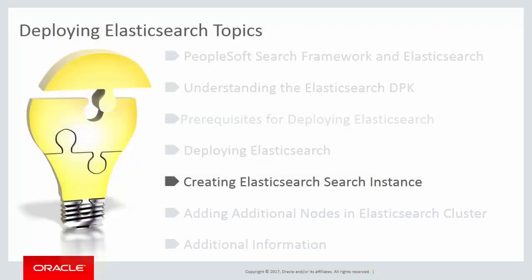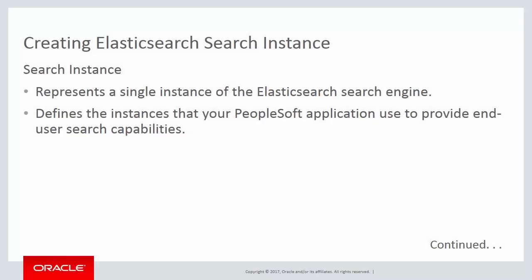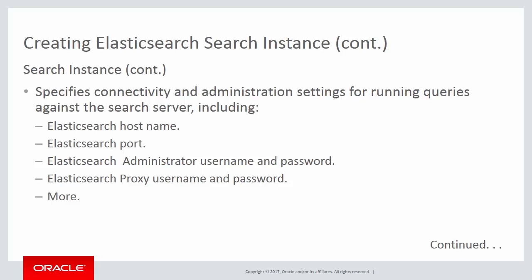After installing Elasticsearch, the next task is to connect the PeopleSoft application with the Elasticsearch engine through a search instance. A search instance in the PeopleSoft Search Framework represents a single instance of the search engine and defines the instances used by the PeopleSoft application for end user searching. The search instance definition specifies connectivity and other administration settings. In a search instance, you provide values for the hostname of the search provider, the port value, the administrator username and password, and the proxy username and password entered while running the Elasticsearch DPK.